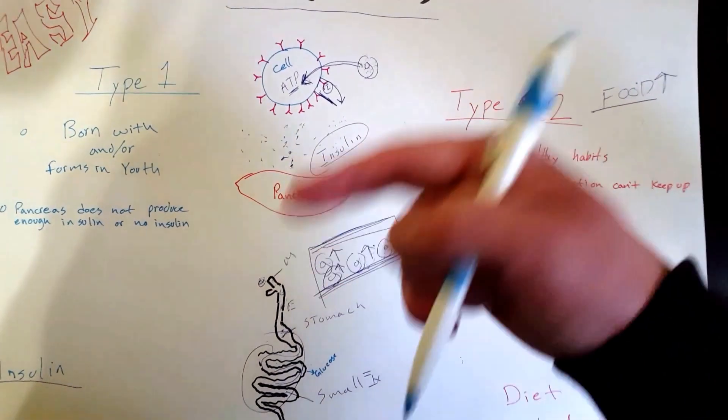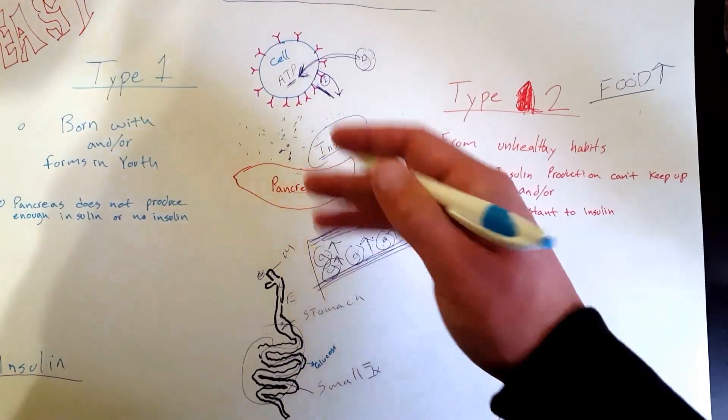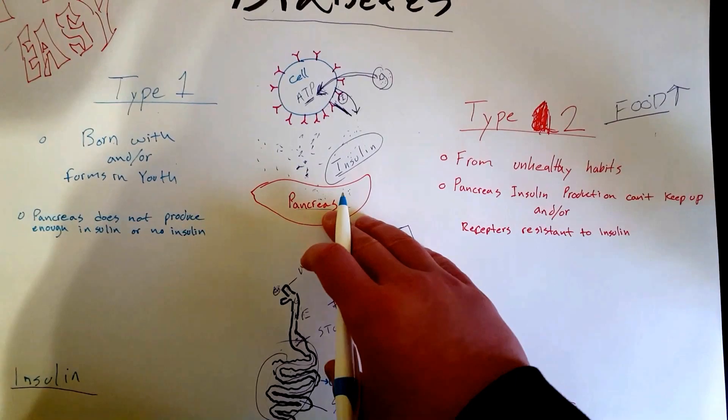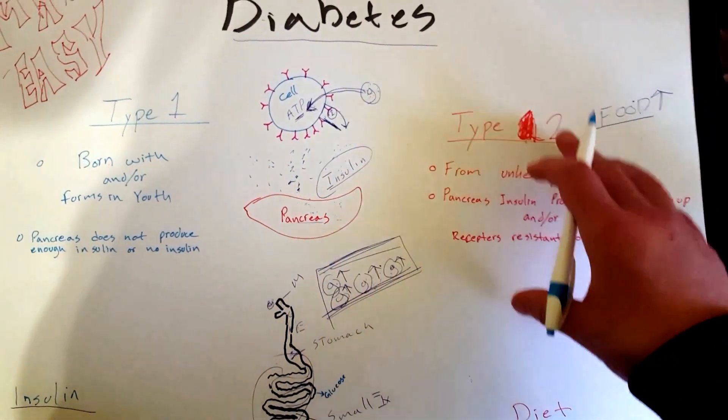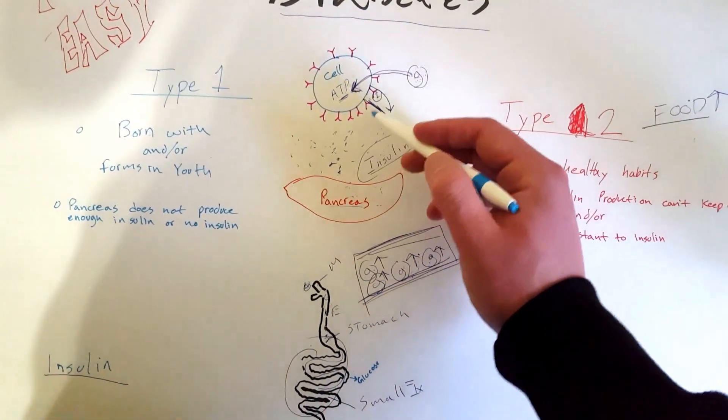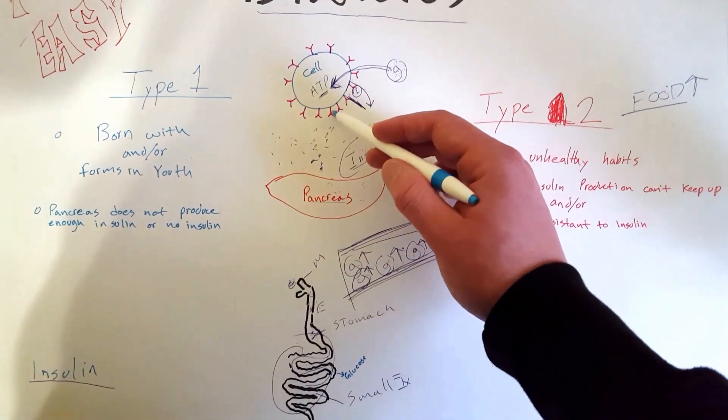In Type 2 diabetes, your pancreas sometimes cannot keep up with the amount of glucose you're creating, and you're overworking it so much that in some cases it just shuts down and stops producing insulin. It taps out and can't go anymore.